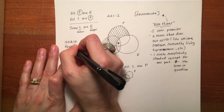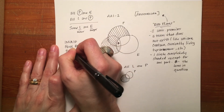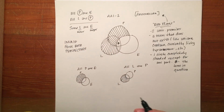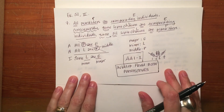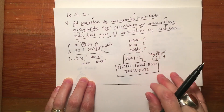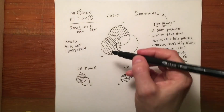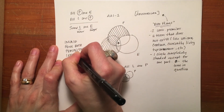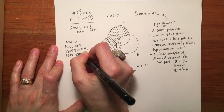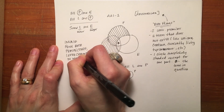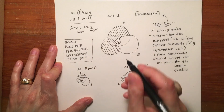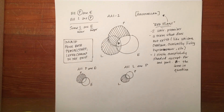Leprechauns — which, if you'll remember, is what L stood for in the original argument — do not exist. So the term L was the one in question, and leprechauns do not exist. That's how you would do a Venn diagram from the Aristotelian perspective.